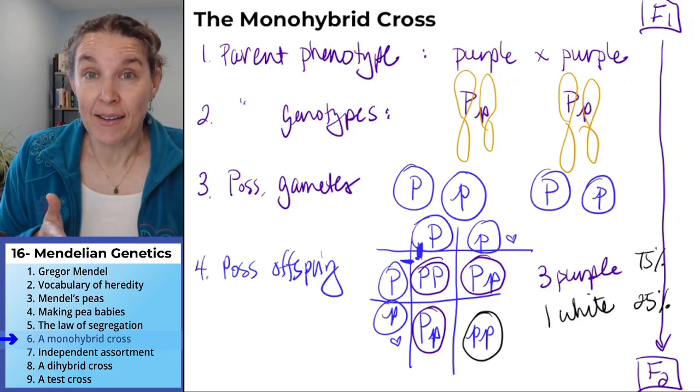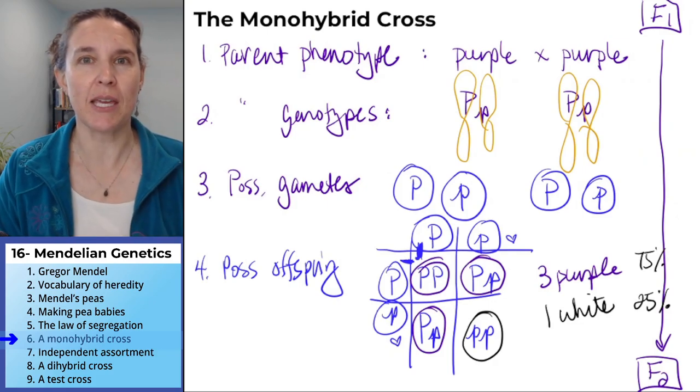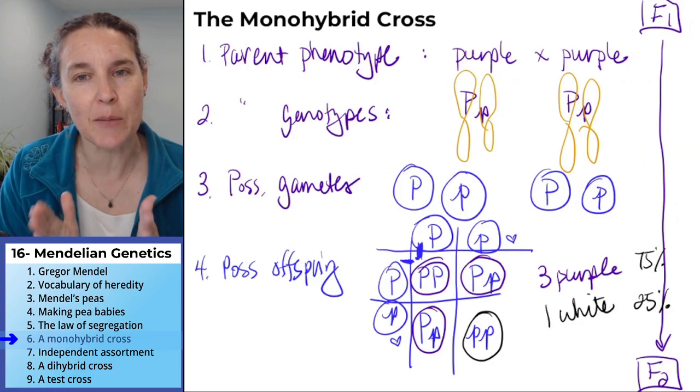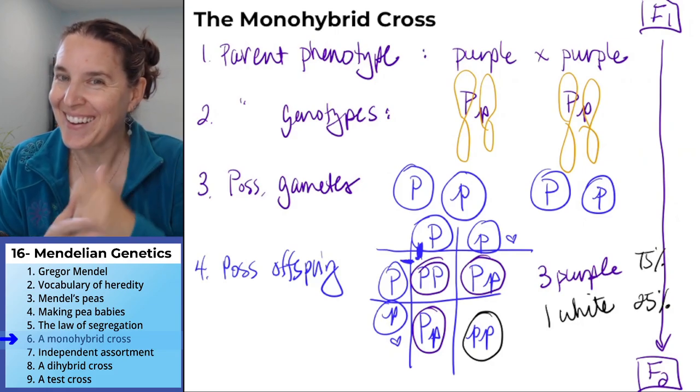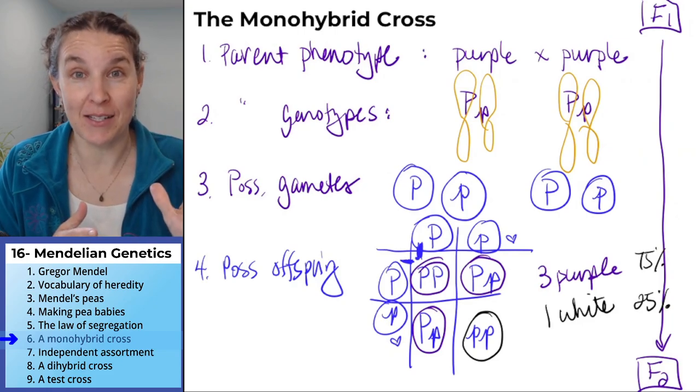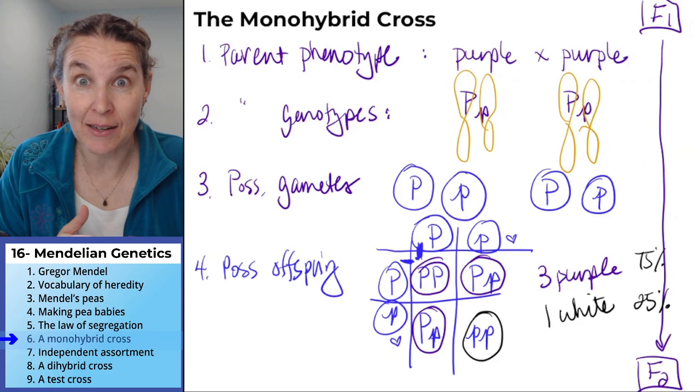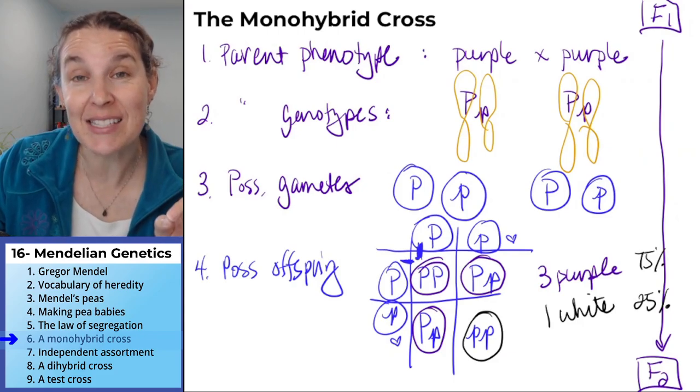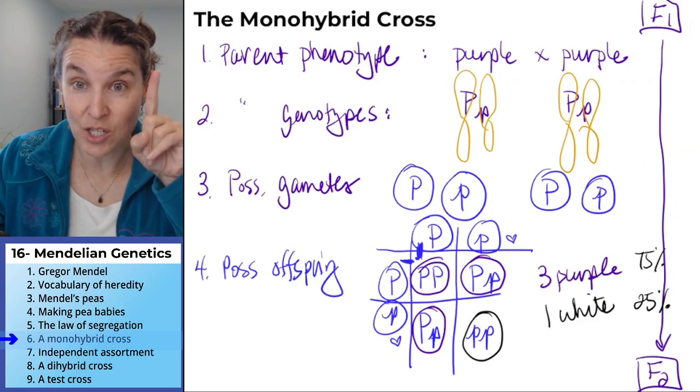We're not done. That was one of Mendel's laws. He said things segregate. Awesome. He also said things independently assort, and you know all about independent assortment. We already know how it works. It's in meiosis again. So let's talk about independent assortment because that's going to matter when we're dealing with two traits, not just one.